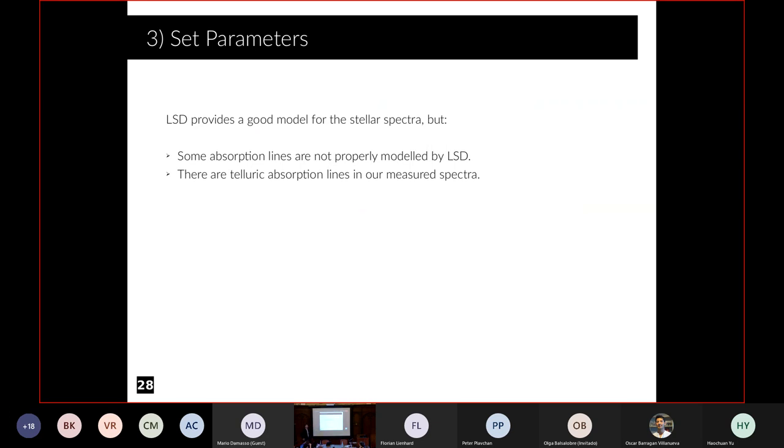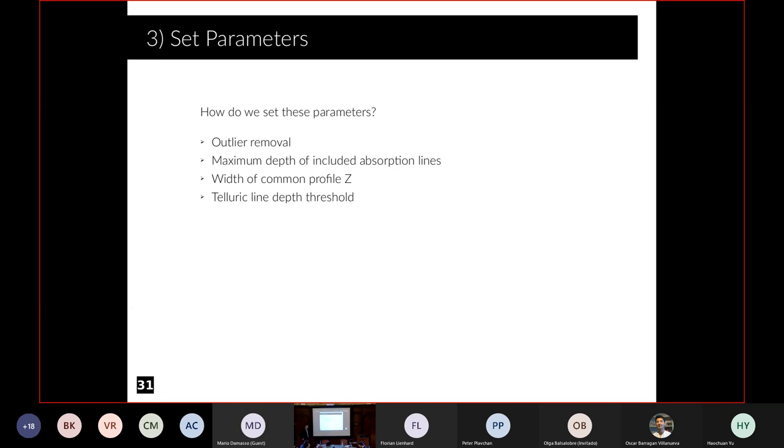As I mentioned, there are some parameters we have to set because LSD uses this simplified model. We assume all lines are similar in shape, but we know deeper lines have a different shape compared to weaker lines. Some lines are saturated. We also just model the stellar spectrum, but we also measure telluric lines in our spectrum. We might be tempted to apply strict data quality cuts, remove any data affected by tellurics deeper than one percent, and remove all data where our model doesn't perfectly fit. But then we remove a lot of RV information. Even if we don't fit the spectrum perfectly, we can still get some RV information out.